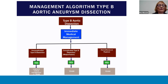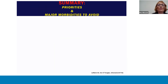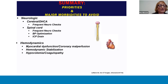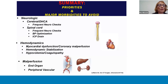Postoperative care of the spinal drain will be covered by Dr. Chatterjee in the second session on acute aortic emergencies. For hemothorax or leak, the best therapeutic option is TVAR. Priorities and major morbidities to avoid for the neurologic system require frequent neurochecks and assessment. Any neurologic dysfunction must be immediately evaluated and treated. For spinal cord ischemia, blood pressure optimization and possible ICP drain are warranted. For hemodynamic stabilization, patients must be assessed for coronary malperfusion and myocardial dysfunction. Hemodynamic stabilization can be accomplished with volume resuscitation and pharmacologic support, with blood pressure managed utilizing an algorithmic approach. For malperfusion — both end organ and peripheral vascular — these must be monitored and immediately treated.